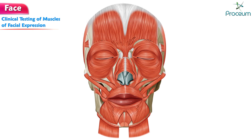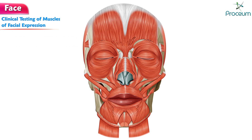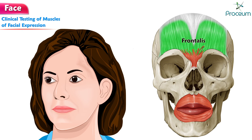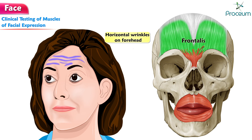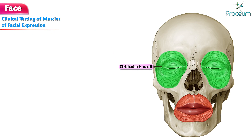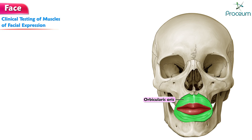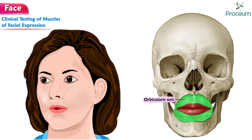Clinical testing of the muscles of facial expression. The muscles of facial expression are involved in facial nerve lesions and are tested clinically as follows. Frontalis: ask the patient to look upwards without moving the head and look for horizontal wrinkles on the forehead. Orbicularis oculi: ask the patient to close the eyes tightly. Orbicularis oris: ask the patient to whistle.